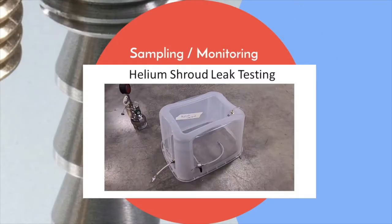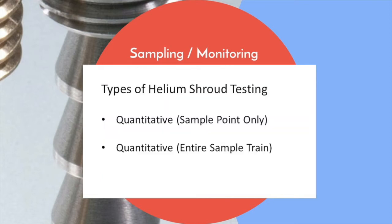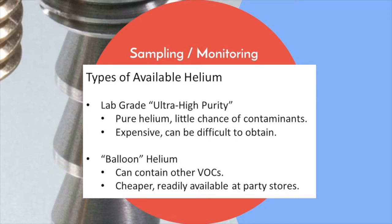Helium shroud leak testing, discussion and demonstration. There are two main types of helium shroud leak testing. The first method involves only leak testing the sample point, while the second method leak tests the entire sample train at the same time. First, a quick word about helium.